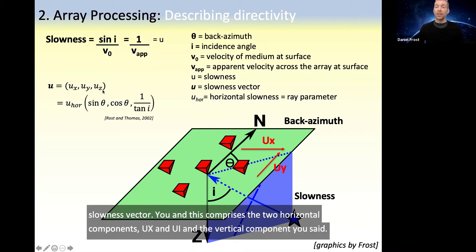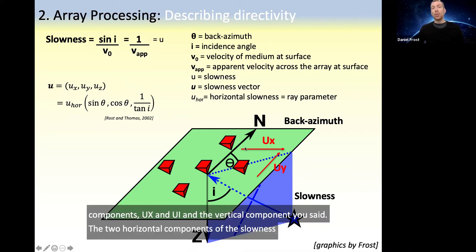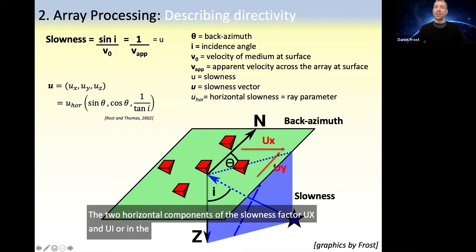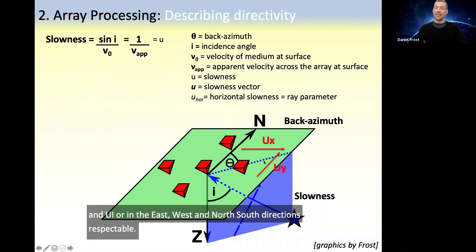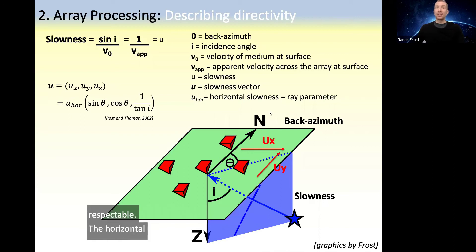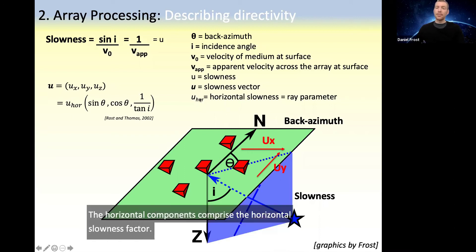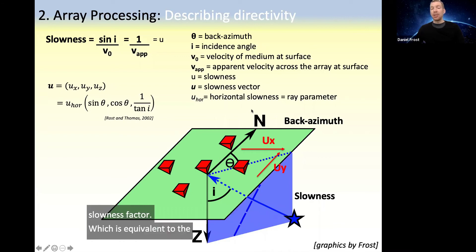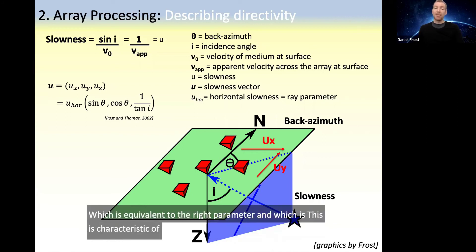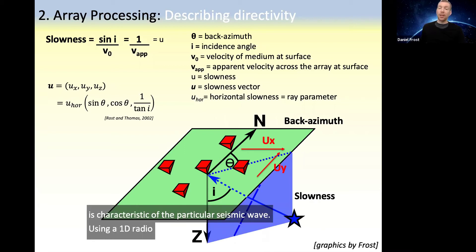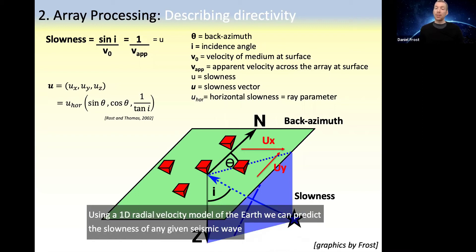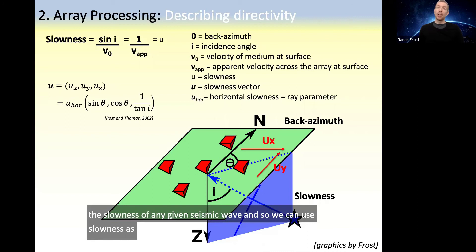The two horizontal components of the slowness vector, ux and uy, are in the east-west and north-south directions respectively. The horizontal components comprise the horizontal slowness vector, which is equivalent to the ray parameter, and this is characteristic of the particular seismic wave. Using a 1D radial velocity model of the Earth, we can predict the slowness of any given seismic wave, and so we can use slowness as a diagnostic tool to identify waves.